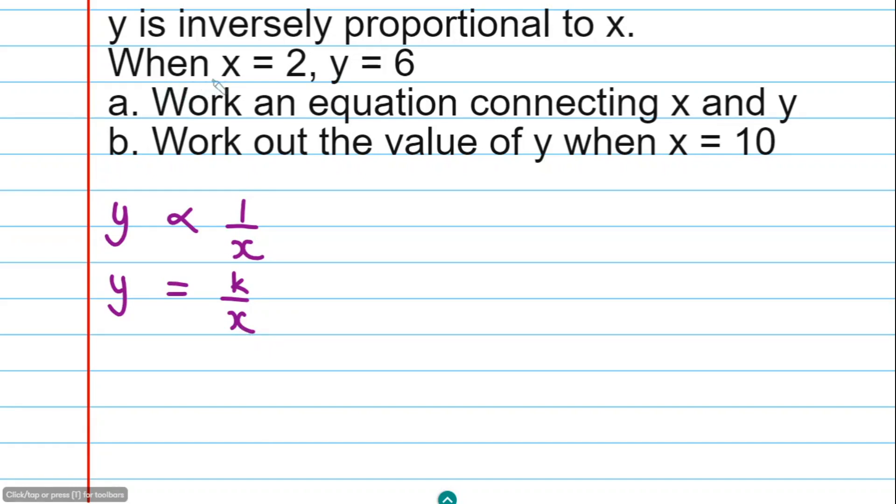Now we know that when X is 2, Y is 6. So I'm going to substitute those pairs here and here to get the constant K. So Y is 6 equals K, the constant, divided by X and X is 2. Now you can see we can calculate the value for K because 2 will multiply 6. So K will be 2 times 6 and that's going to give you 12.